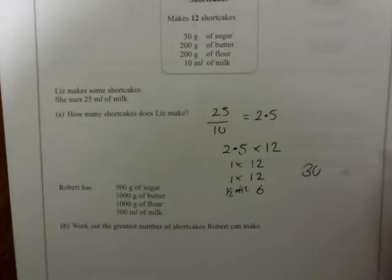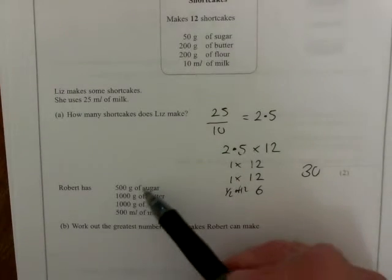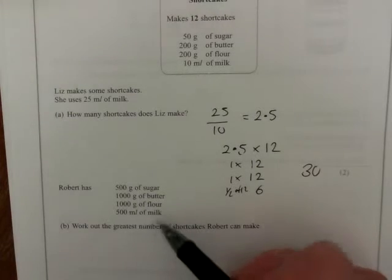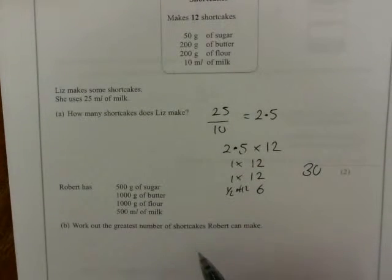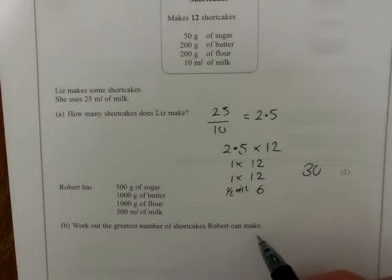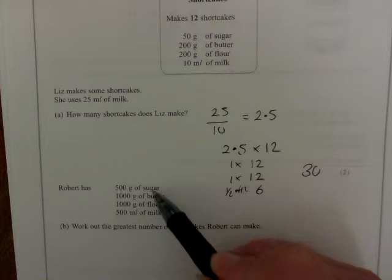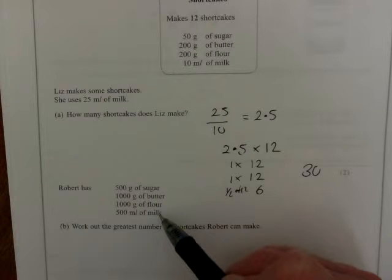Now, next bit of information, we've got these ingredients for Robert. He's got 500 of sugar, 1,000 butter, 1,000 flour, 500 milk. Work out the greatest number of shortcakes Robert can make. Now, you'll be limited here by these ingredients.